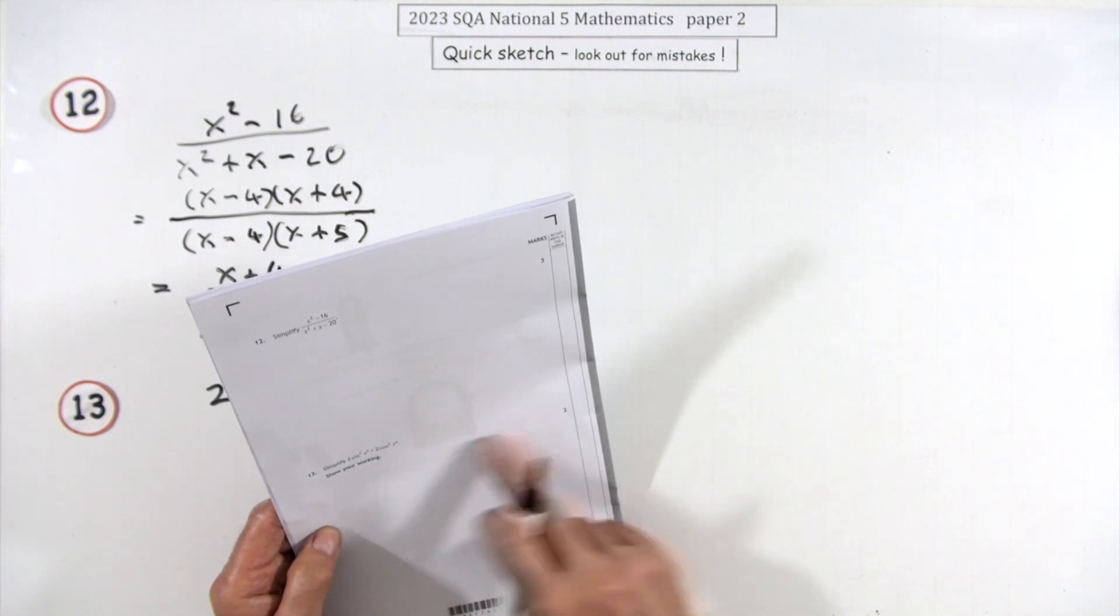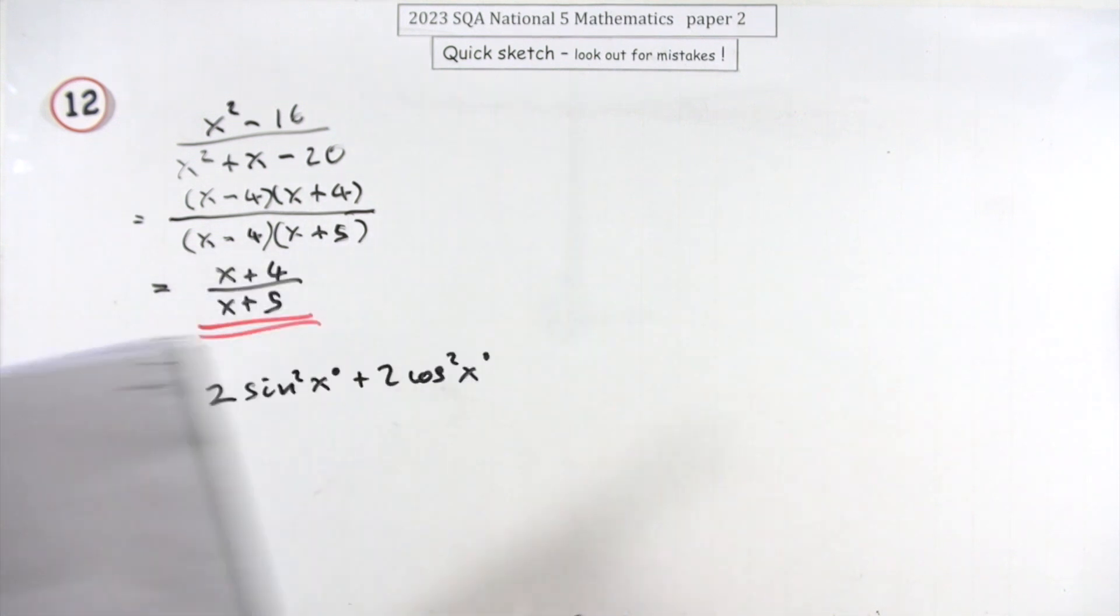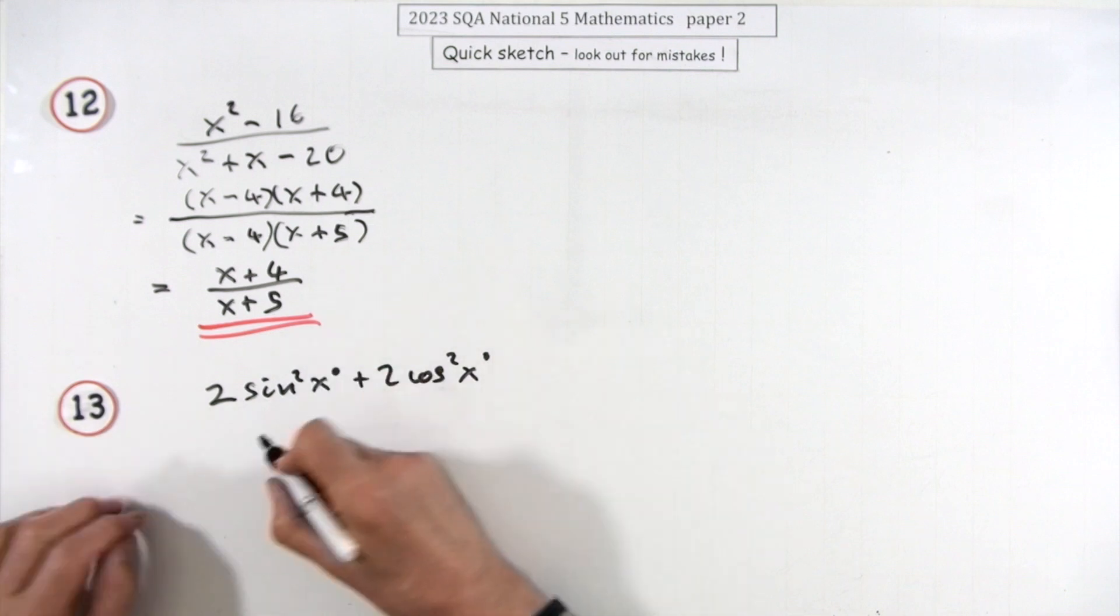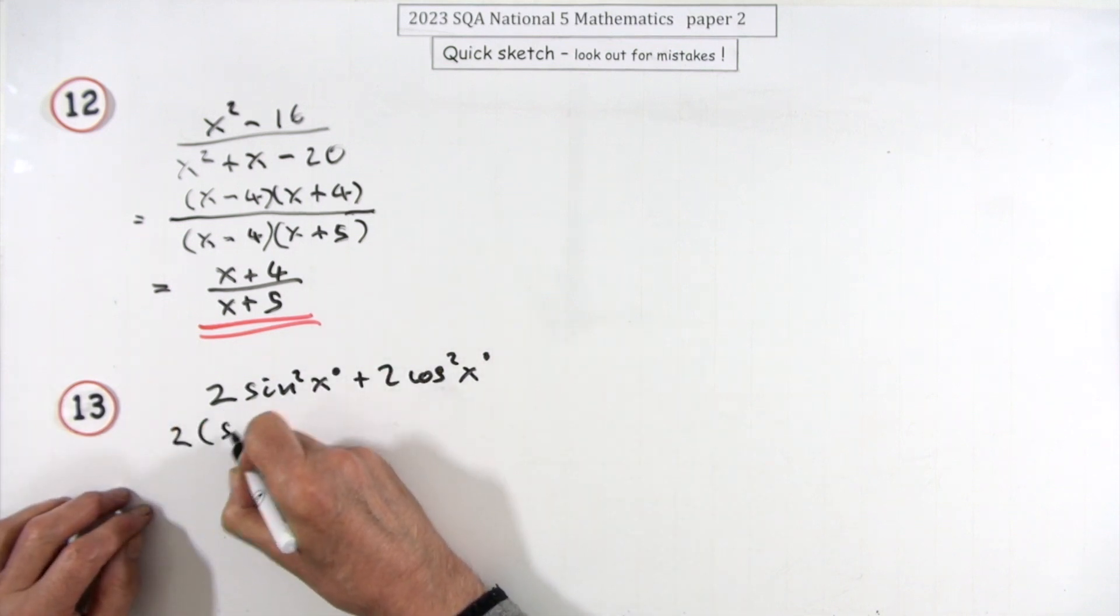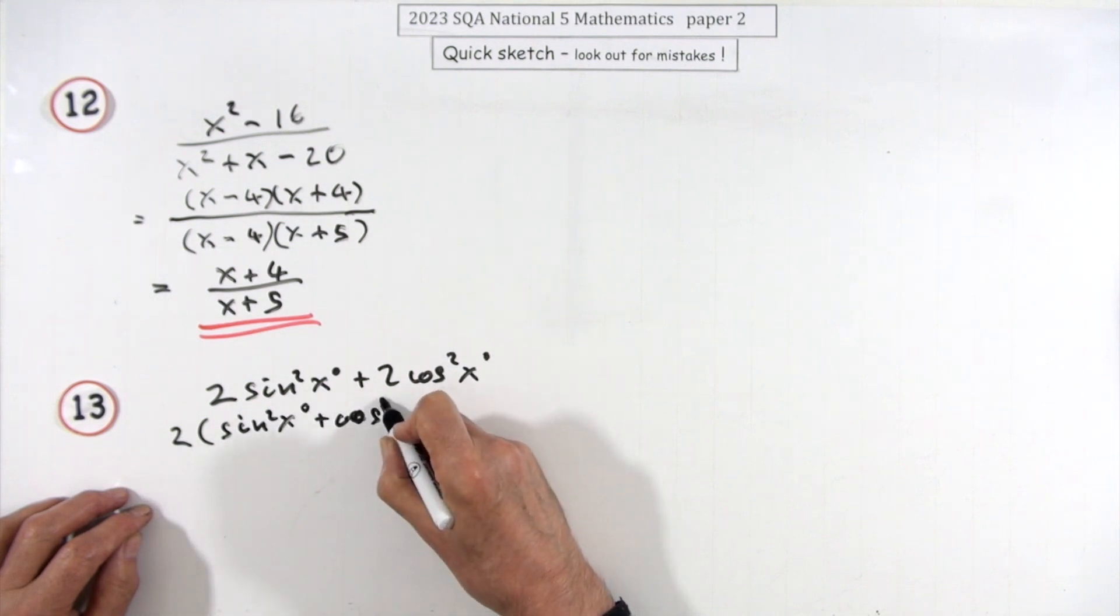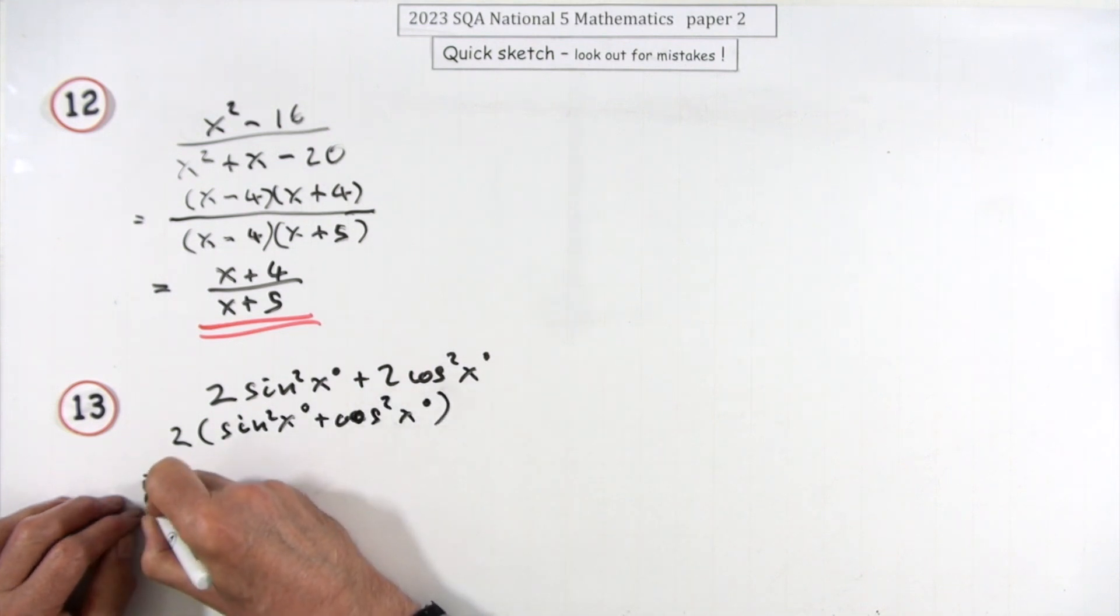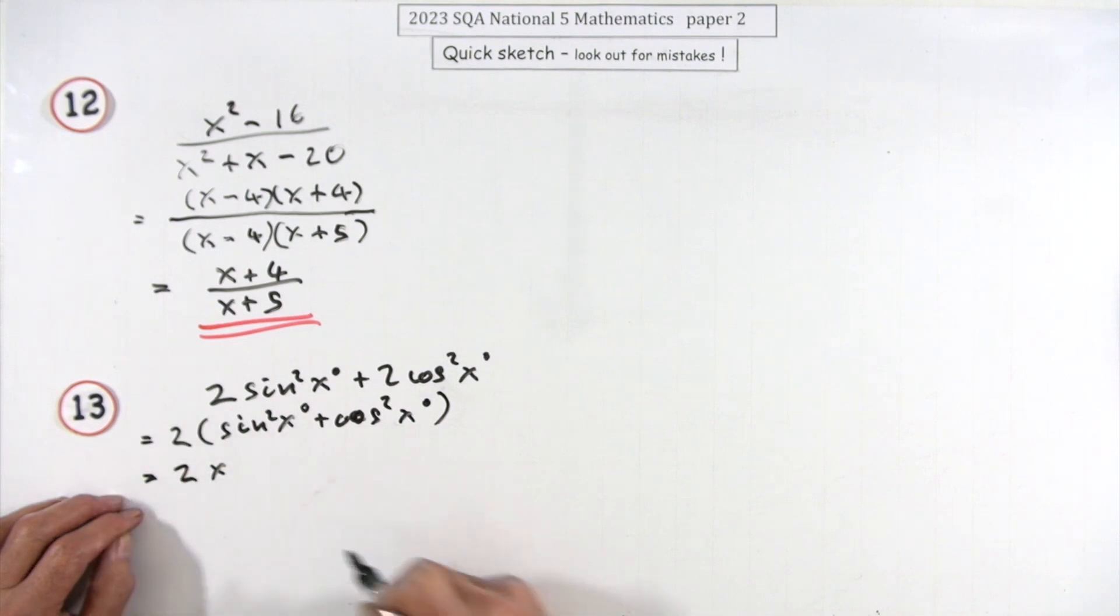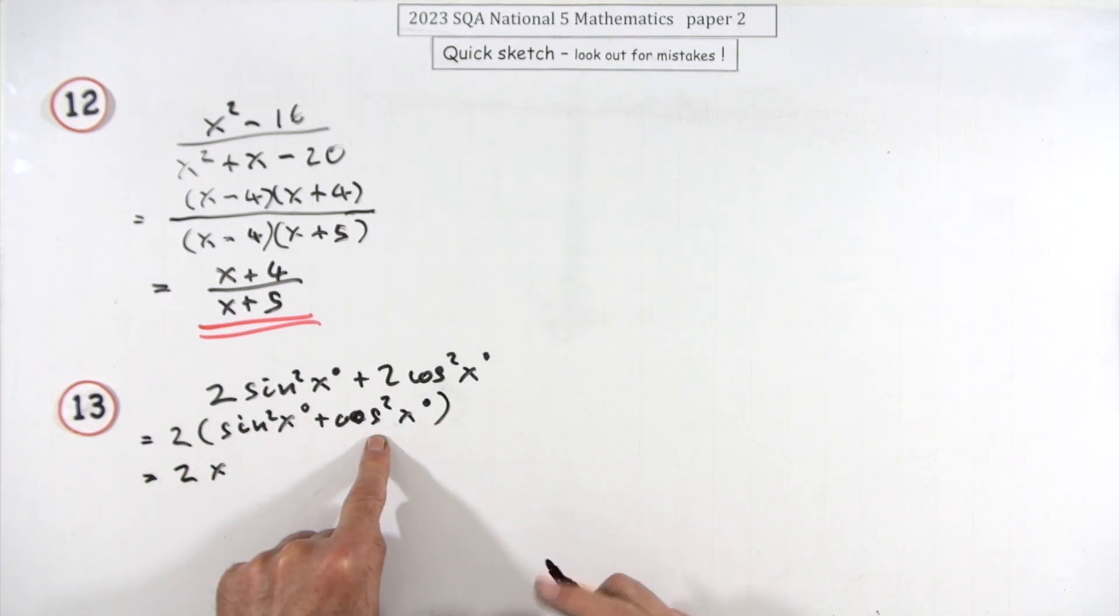Number 13, just for two marks. Simplify this. Show your working. It's better to show that you're taking out a common factor to leave sin squared x plus cos squared x. You should know that sin squared plus cos squared makes 1, so I can show that by replacing that with a 1, which means the answer's 2.